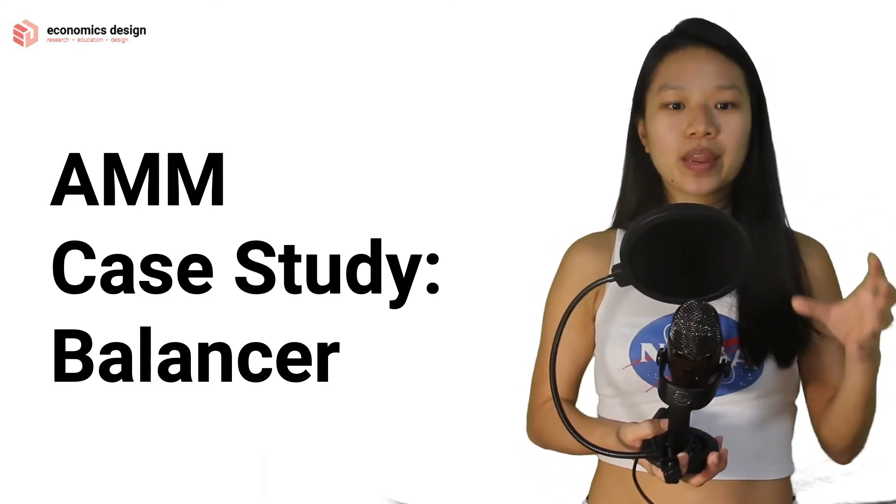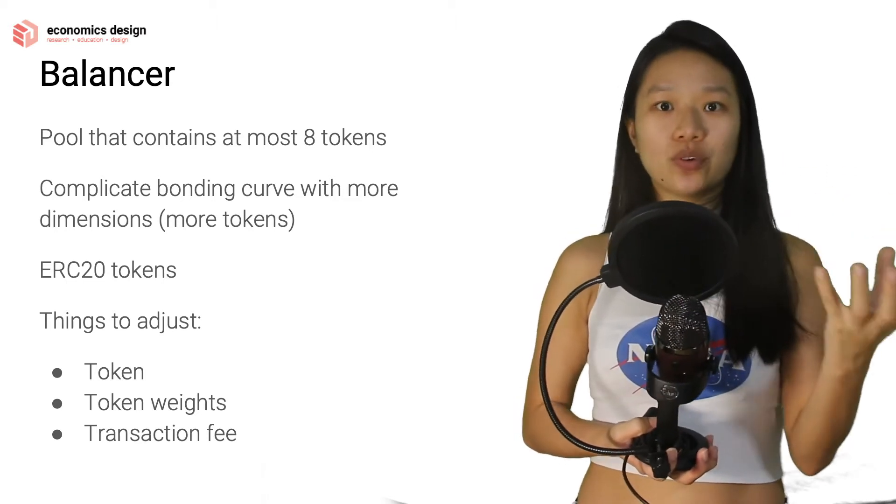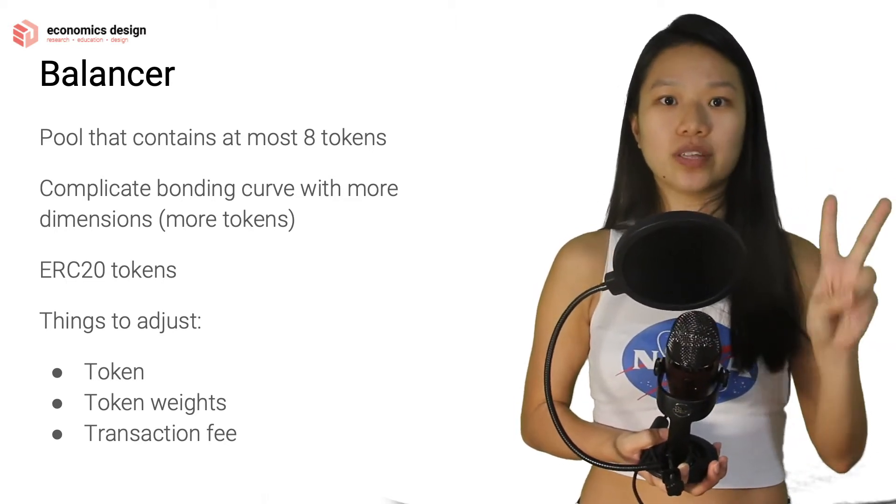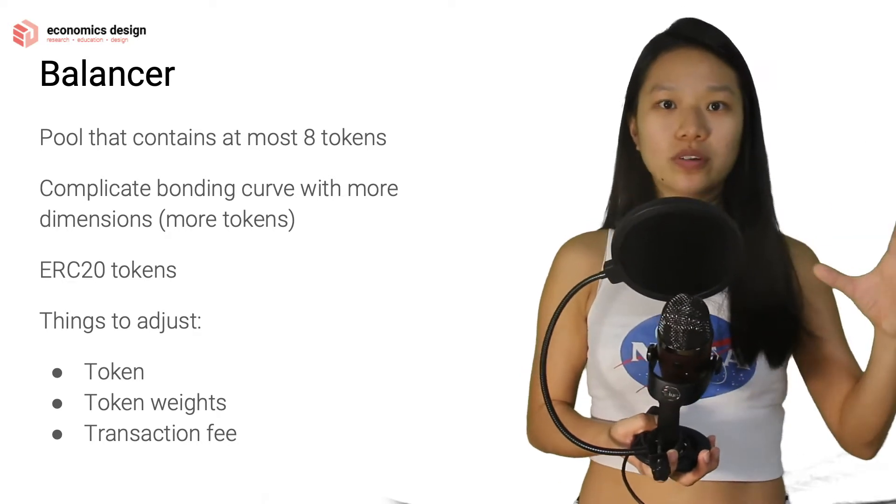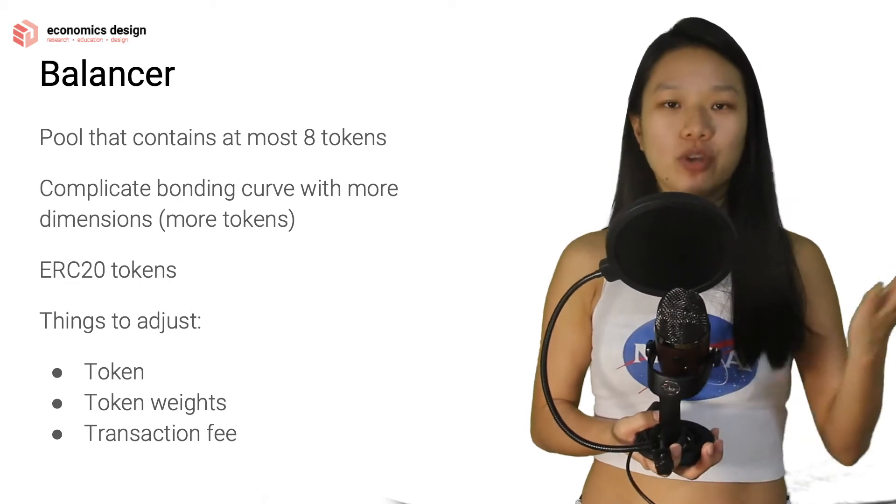Balancer works in a similar way as Bancor and Uniswap. You realize that each liquidity pool only has two tokens. With Balancer, it's more interesting and more complex - it has eight different tokens, or it can contain up to eight tokens.